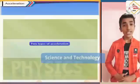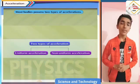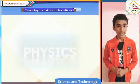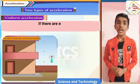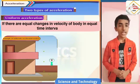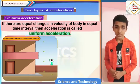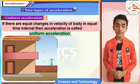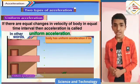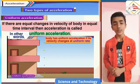Now let us understand the two types of acceleration possessed by most bodies. First, uniform acceleration: if there are equal changes in velocity of a body in equal time intervals, then acceleration is called as uniform acceleration. In other words, a body has uniform acceleration if its velocity changes at a uniform rate.